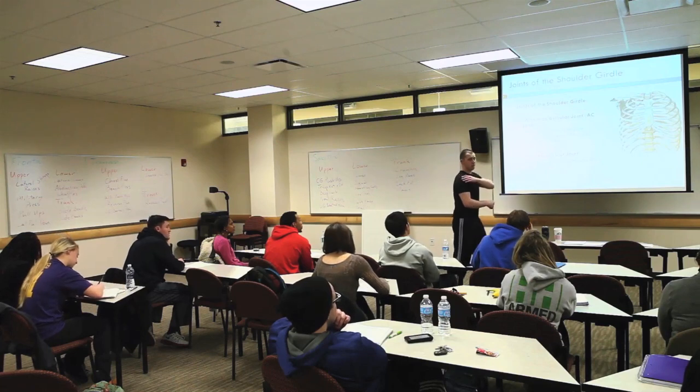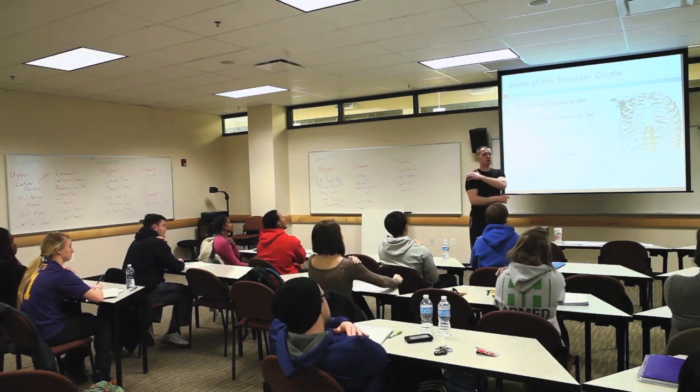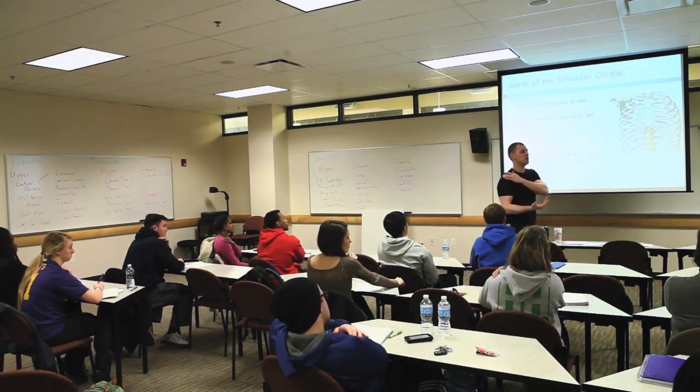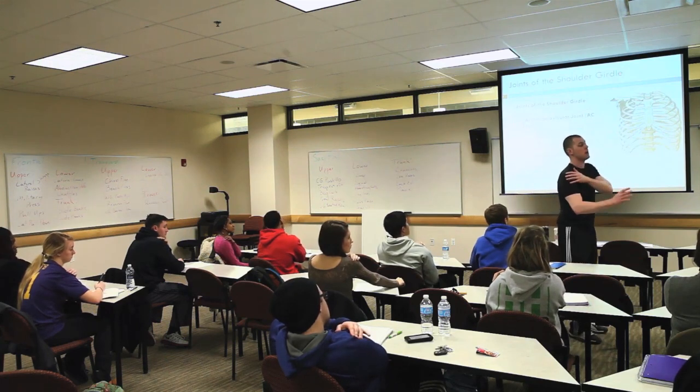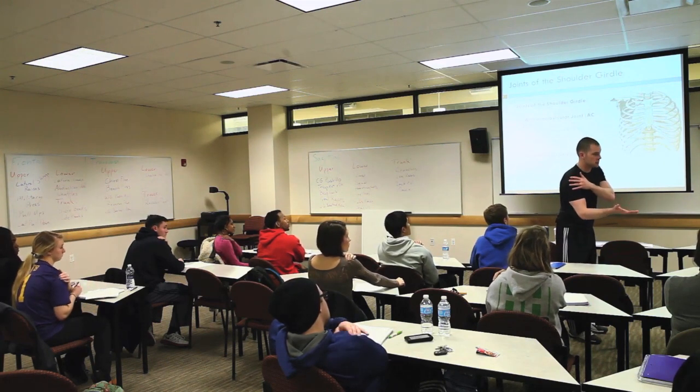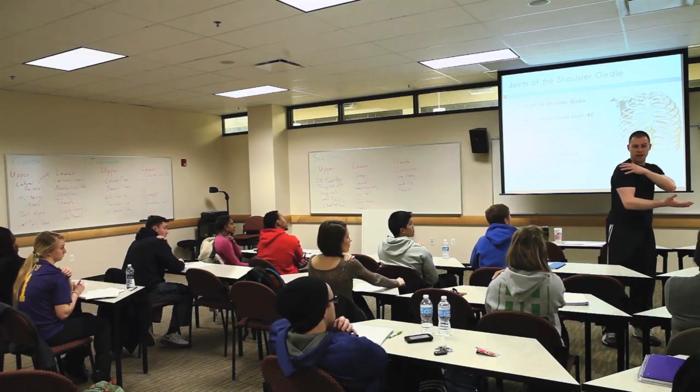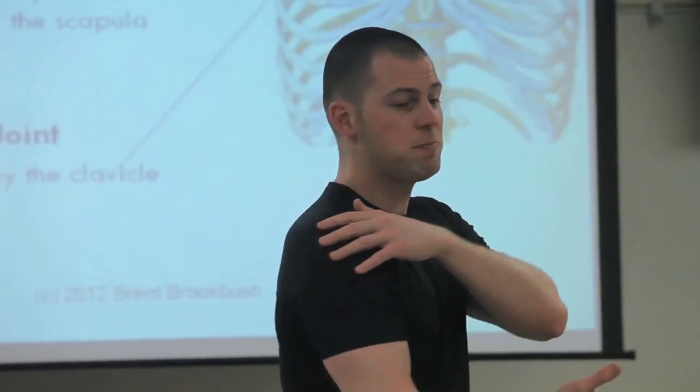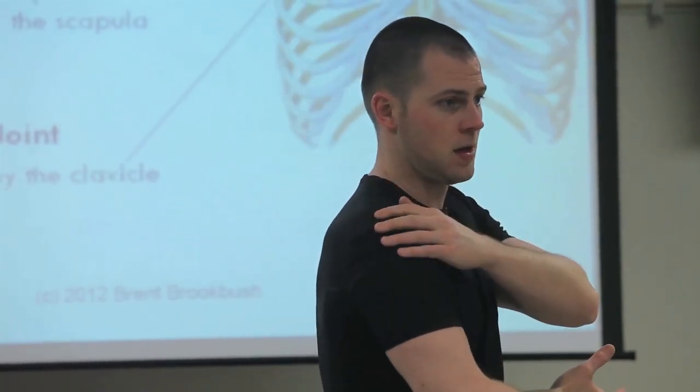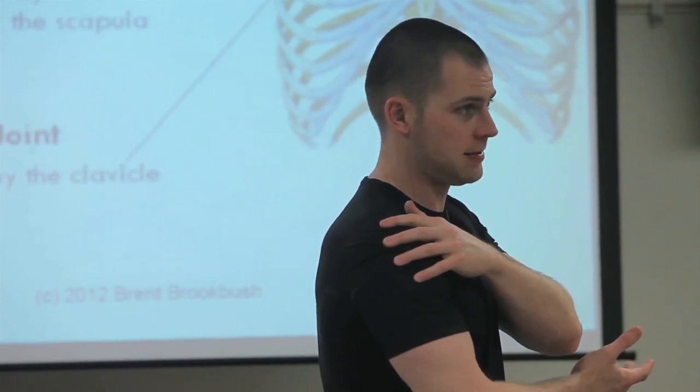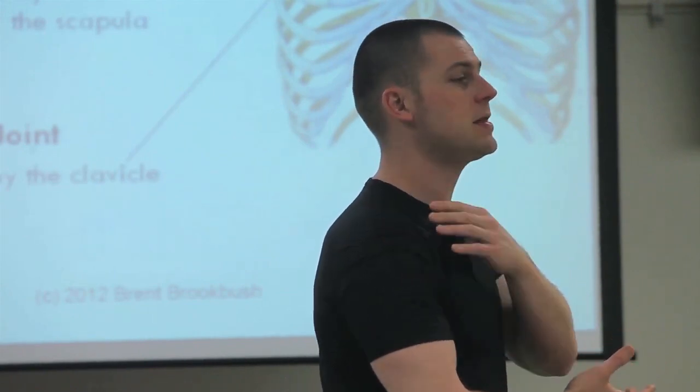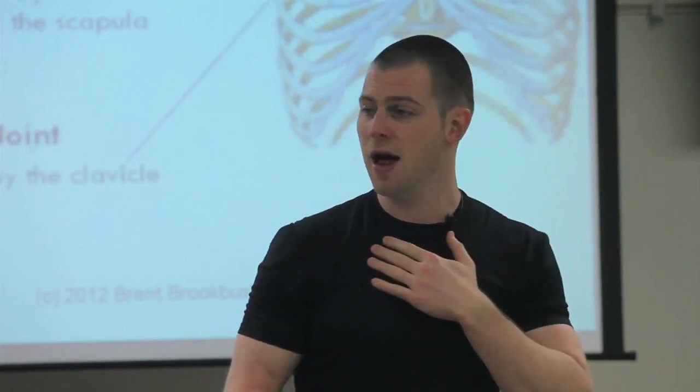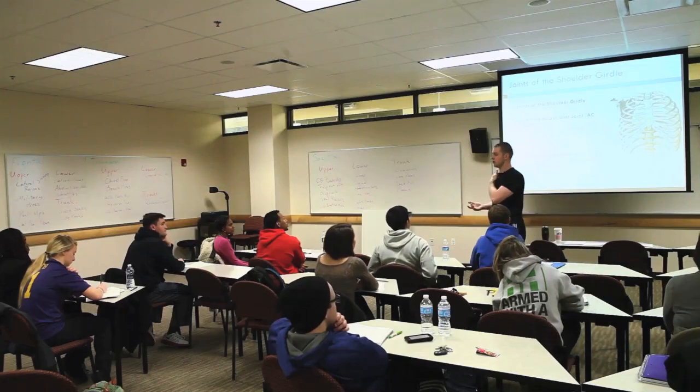Your acromioclavicular joint, everybody feel this right here, feel that shelf where you don't have any deltoid. It's just above your deltoid, doesn't matter how big your deltoids are you still don't have deltoids here. So right here you feel this shelf, well that's part of your scapula, called your acromion process. What's this bone right here called? This is your clavicle, right, your collarbone is your clavicle.